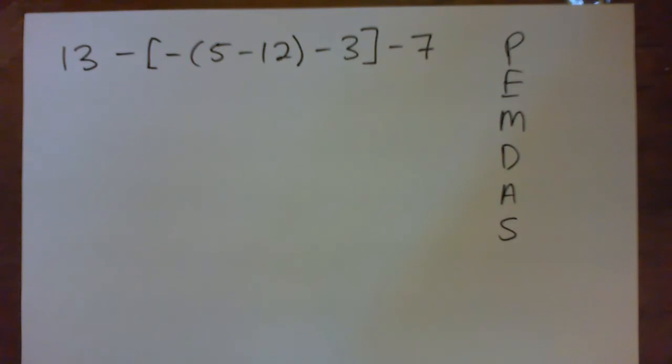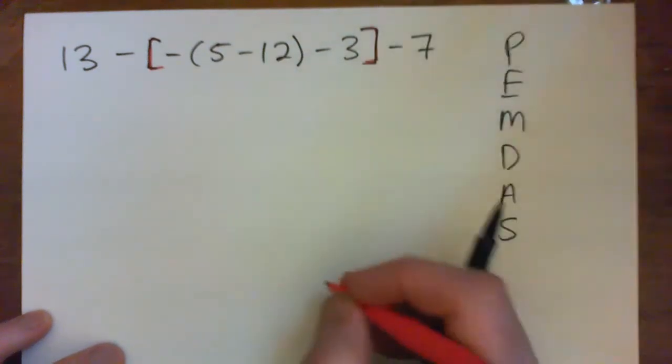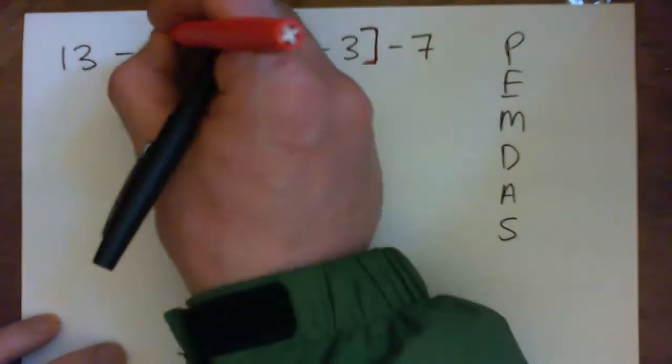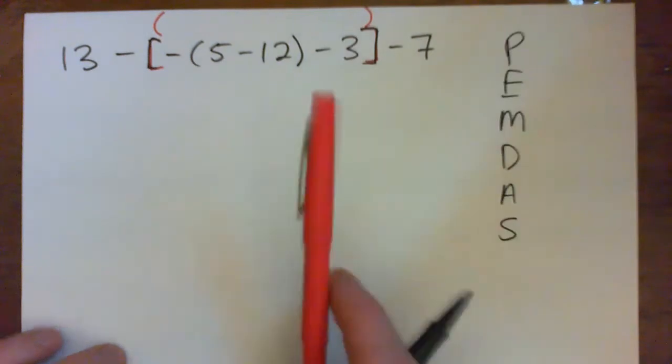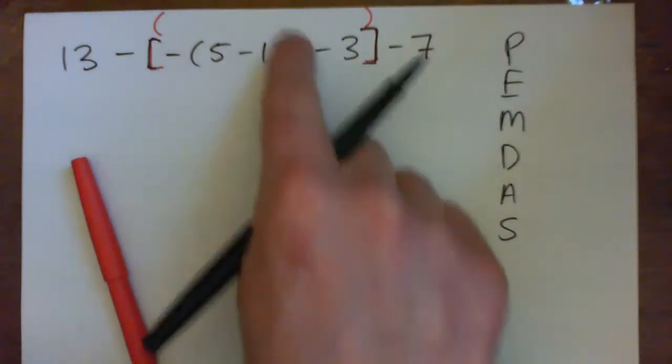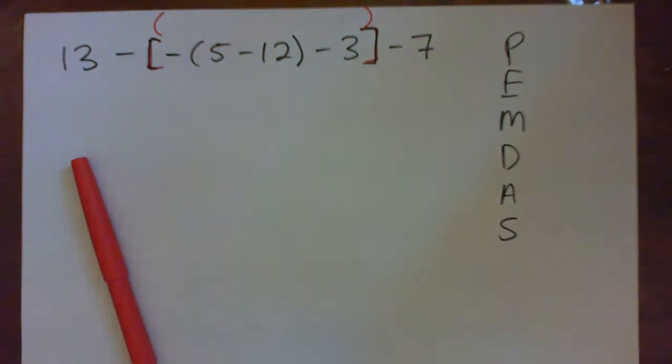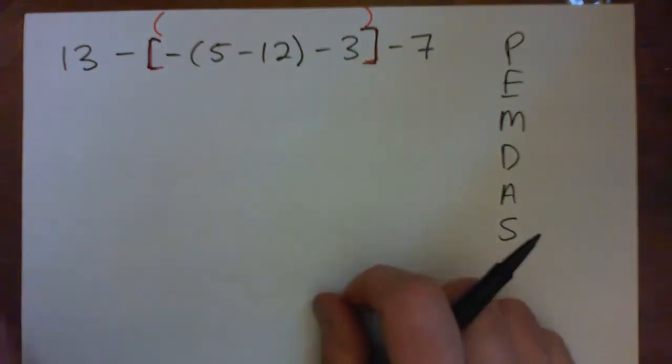So let's see. Again, remember the square bracket is just another type of parenthesis. You might as well have another parenthesis there. It just looks nicer because it's different than this curved parenthesis, but it's another type of grouping symbol. It doesn't mean anything different, right?